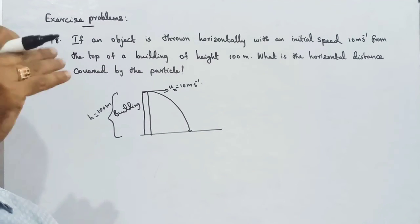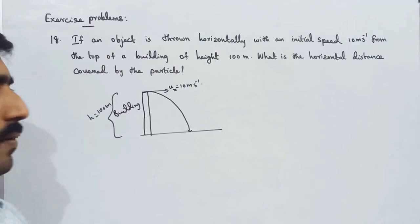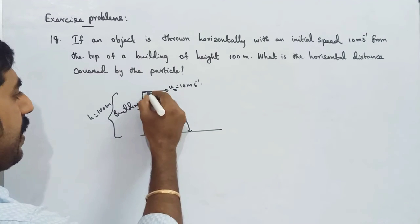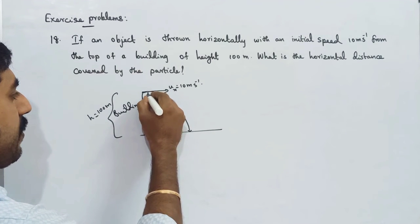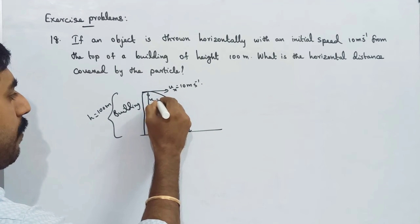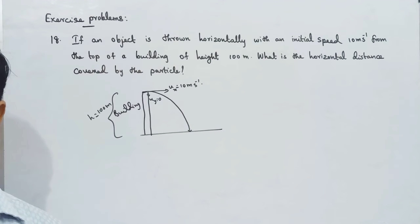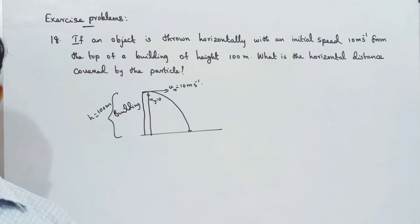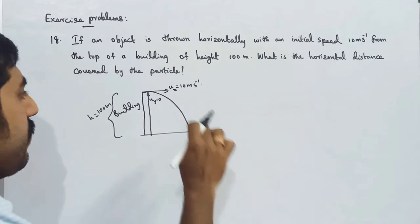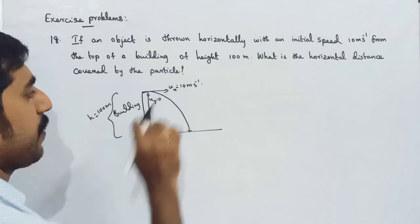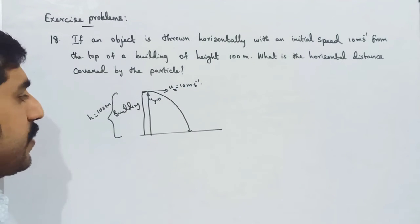Vertically, the initial speed Uy is equal to 0 — vertical initial speed is 0. Horizontally, the initial speed Ux is 10 m/s.